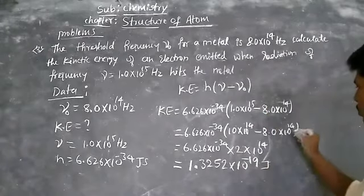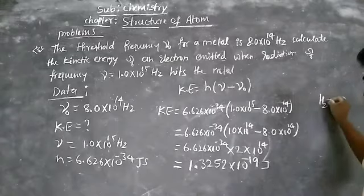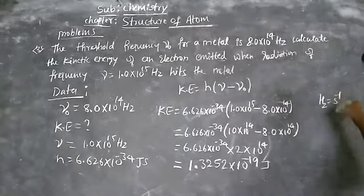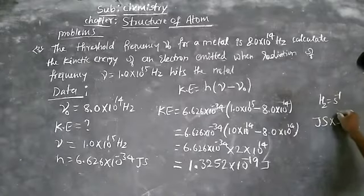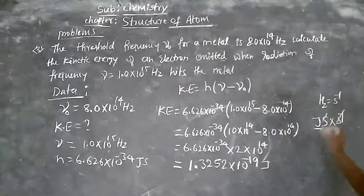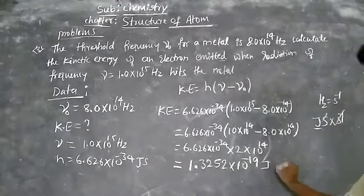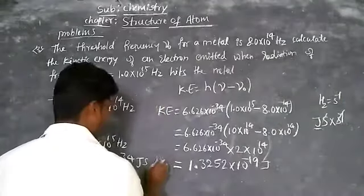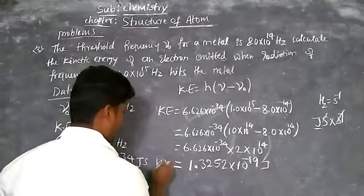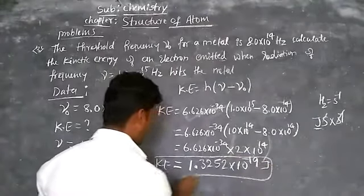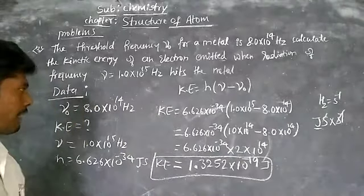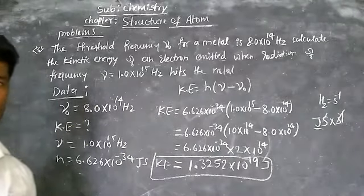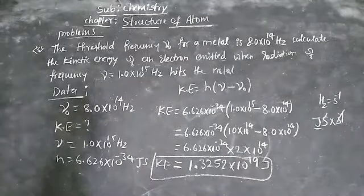Hertz is nothing but per second, so joule·second × per second cancels the seconds, leaving joules as the unit. This is the kinetic energy of the emitted electron.